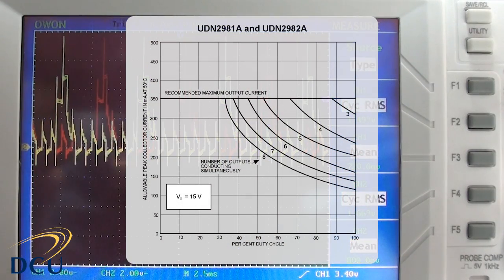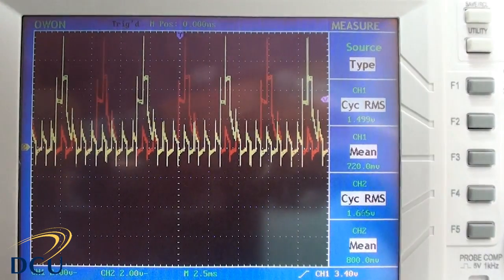So if we look at the data sheet, in this case here we have a plot of allowable peak current against duty cycle. If we had a duty cycle of 100% and we had all eight outputs turned on at the same time, we would only be allowed around 120mA. Because we have all eight outputs in use but we have a duty cycle of only 12.5%, we can pretty much use the maximum recommended current up to 350mA. The problem is that we're not necessarily able to drive that through the Arduino.